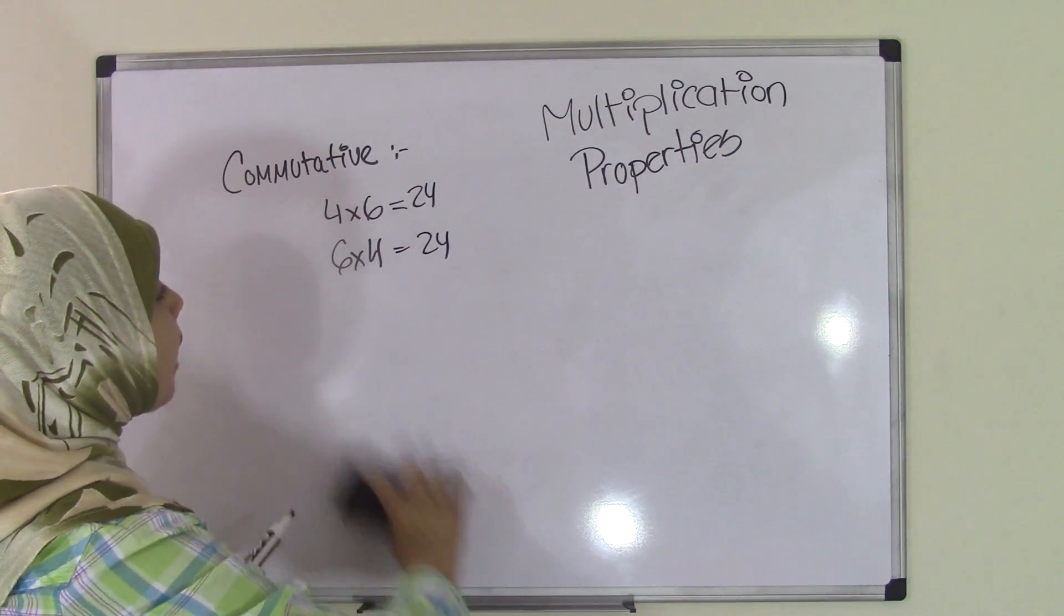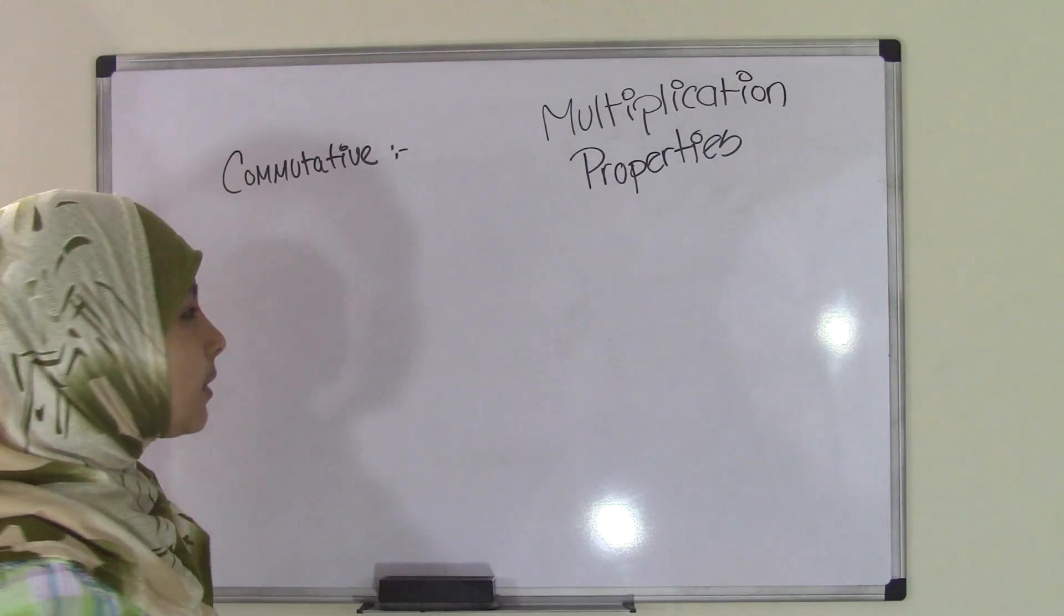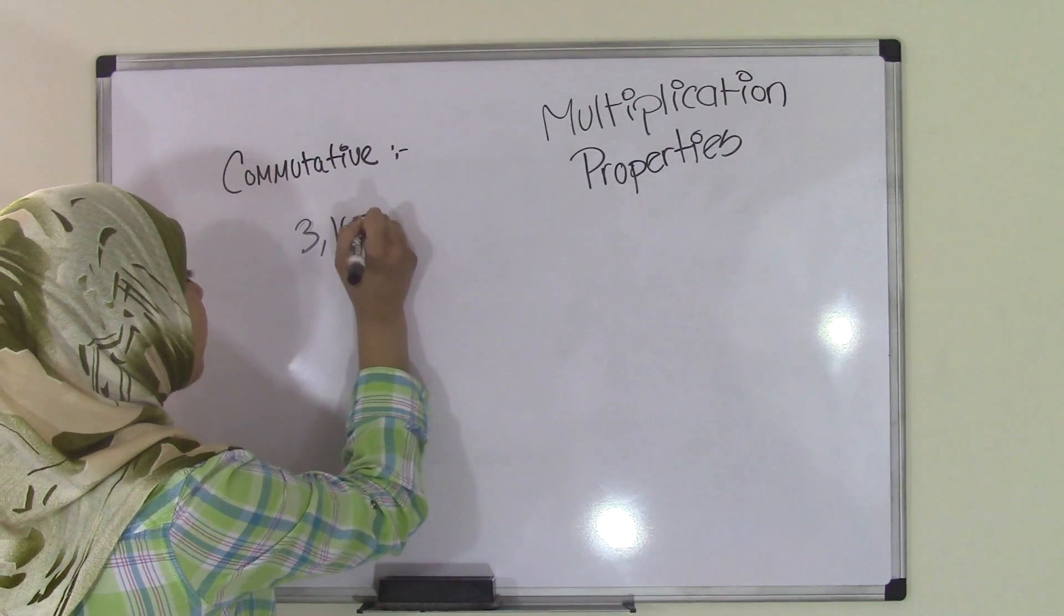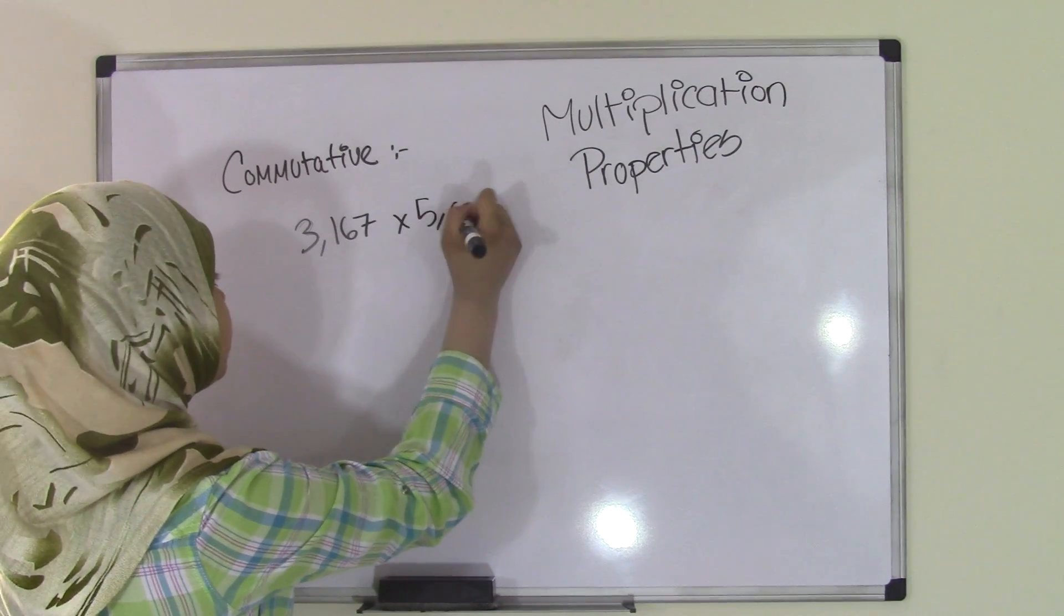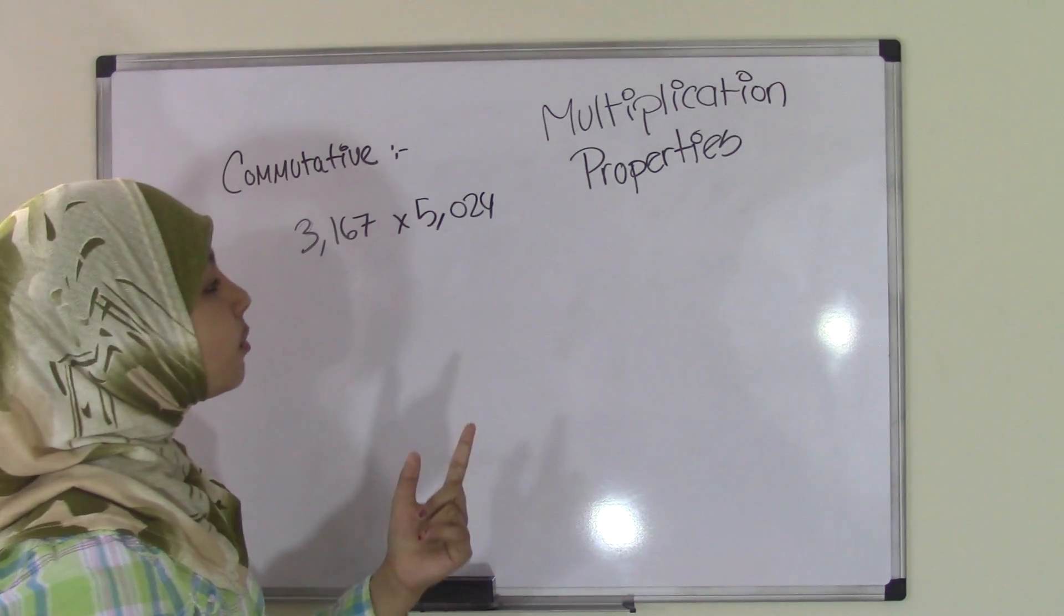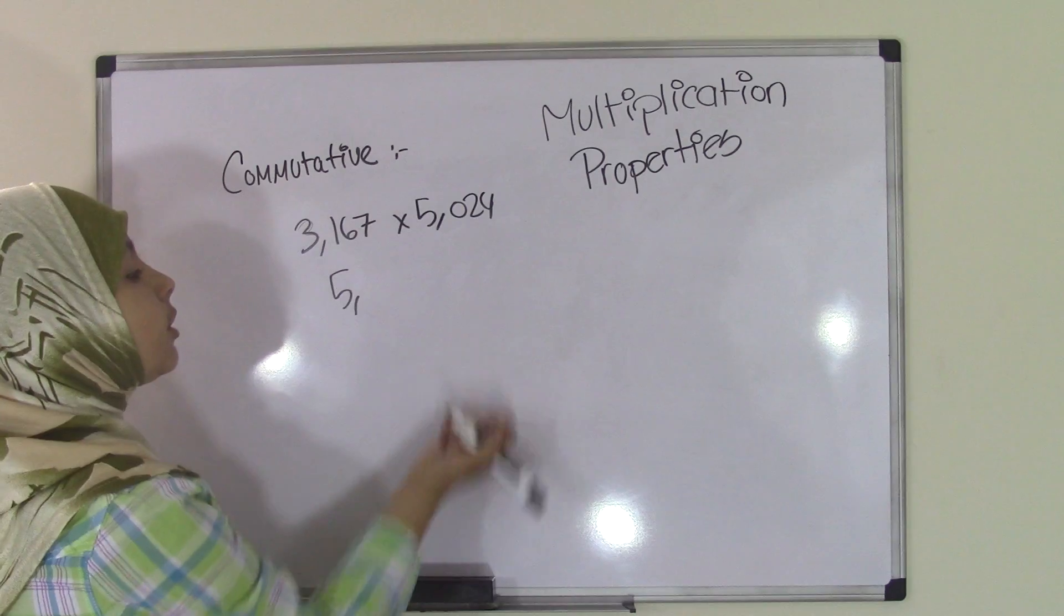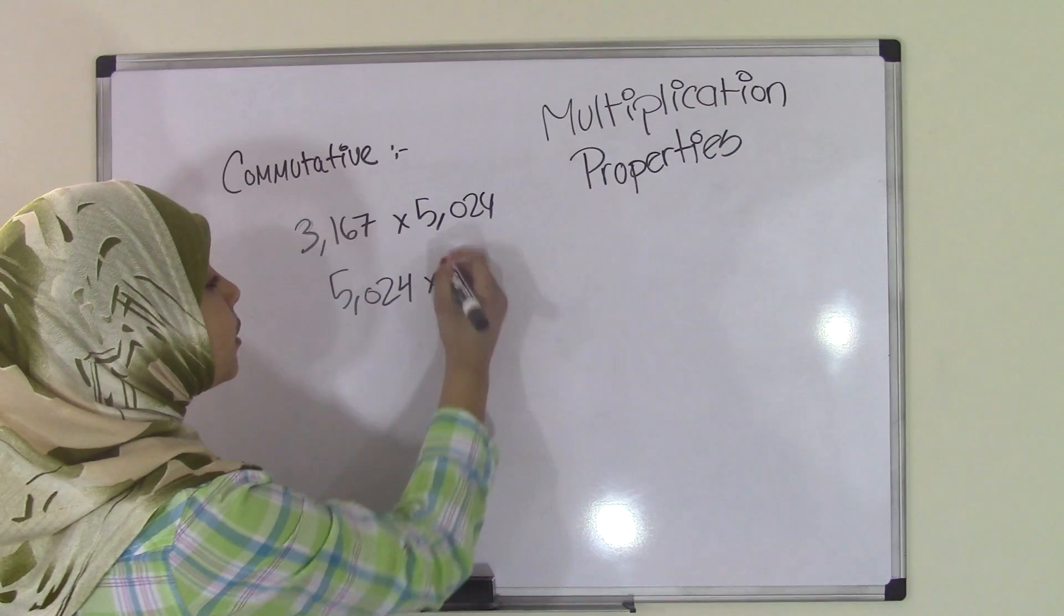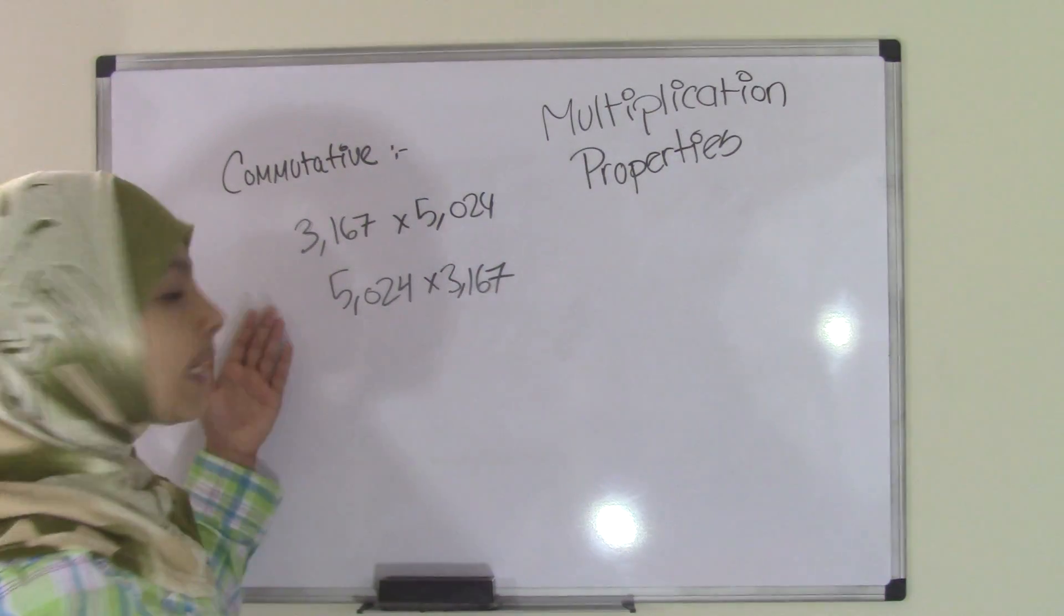You'll still get the same product of 24. Now let's try another example so you can understand this better. Let's use bigger numbers this time. Let's say we have 3,167 times 5,024. In the commutative property, you can still switch those numbers around no matter what their value is. Because in multiplication, that's a fact - the order doesn't matter. You'll still get the same product because it's multiplication. So that's the commutative property.